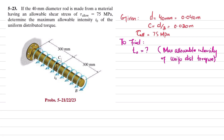As we know, the allowable shearing stress formula is: τ = T·c / J, where T is the torque, c is the radius, and J is the polar moment of inertia.